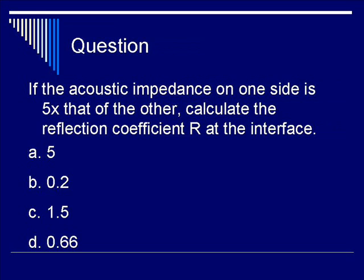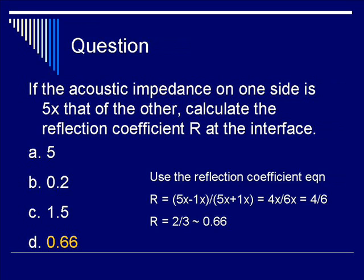Recall that the equation is R equals Z2 minus Z1 over Z2 plus Z1. You may pause the video temporarily to figure out the answer. The correct answer is D, 0.66. If the acoustic impedance is five times greater on one side than the other, you expect a lot of reflection of the initial ultrasound wave. Plugging in the equation for R, you get 5 minus 1 over 5 plus 1. That equals 4 over 6, which becomes 2 thirds, or roughly 0.66.